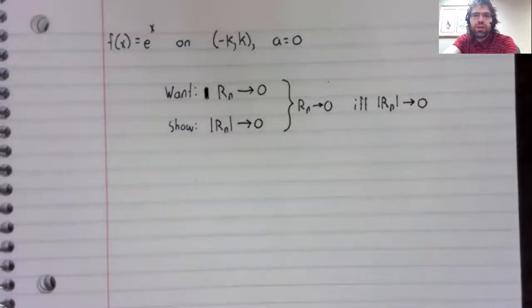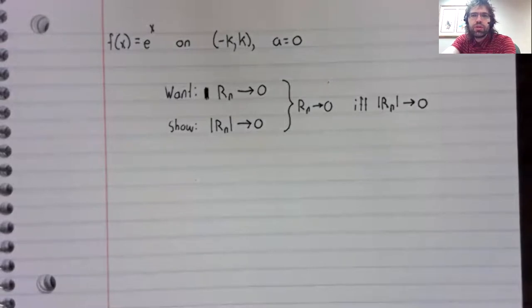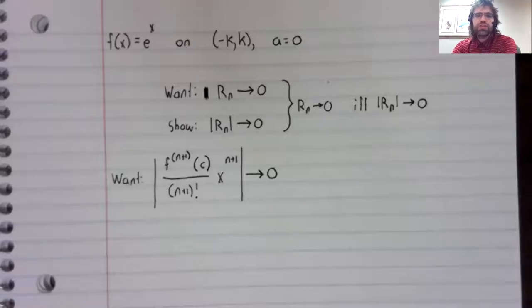Let's remind ourselves of what the remainder looks like. For the exponential function to equal its Maclaurin series, this is what we need.